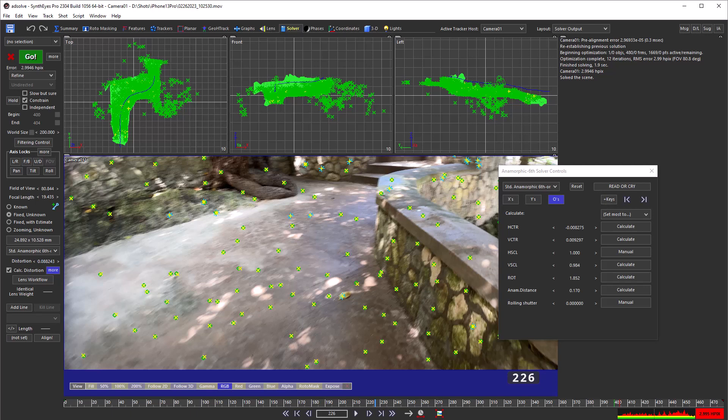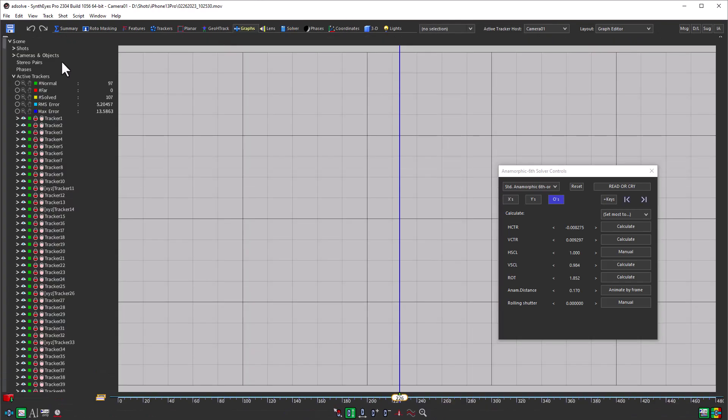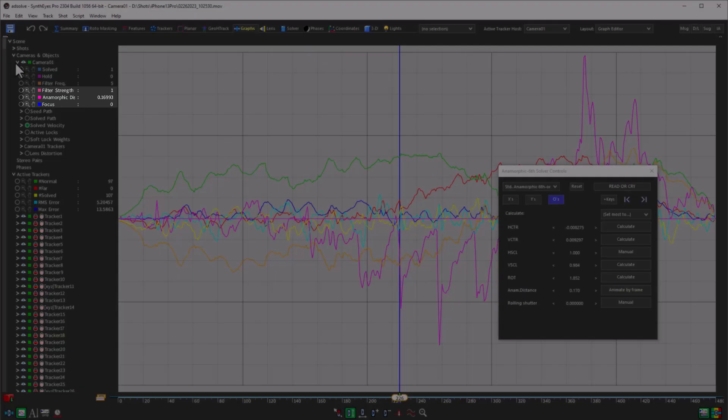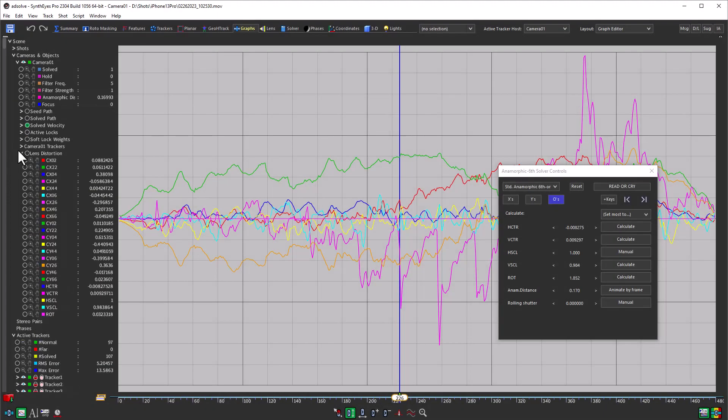On shots with focus pulls, you'll want to use Animate by Frame and Animate on Keys mode for the anamorphic distance. You'll find anamorphic distance in the graph editor directly under the camera, not under the lens distortion, because, let's say it all together, anamorphic distance isn't a lens distortion.